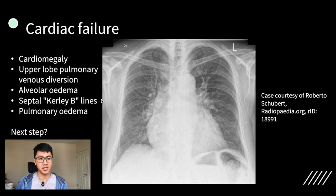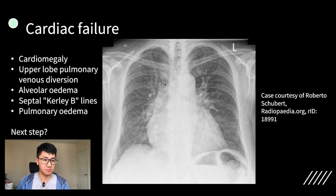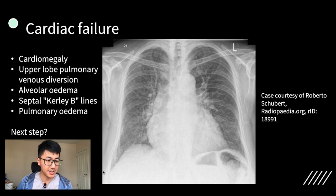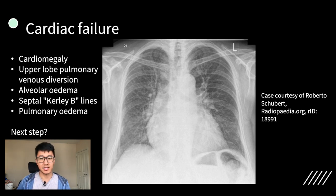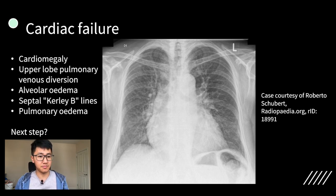Other features of cardiac failure include alveolar edema, which is a fluffy kind of perihilar edema. You can also look for septal Kerley B lines — I think there is one here in the right costophrenic angle. This essentially is interstitial edema. And again, you think about the next steps, so things like diuretics or doing other tests like BNP.